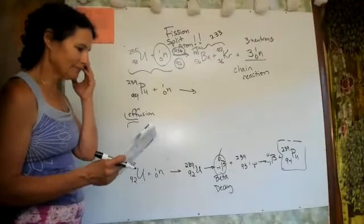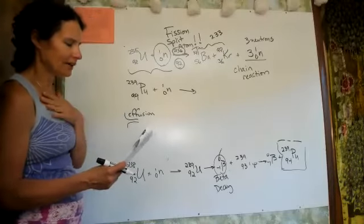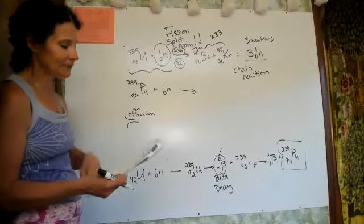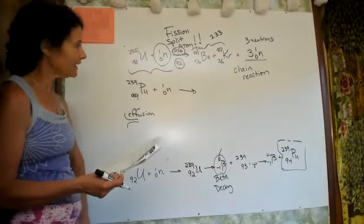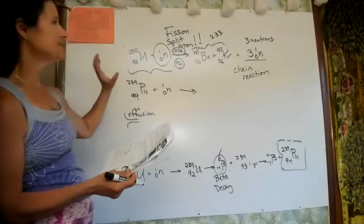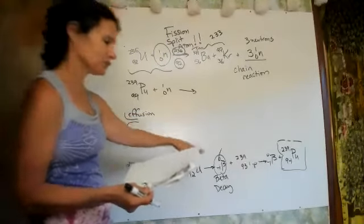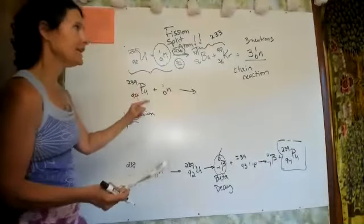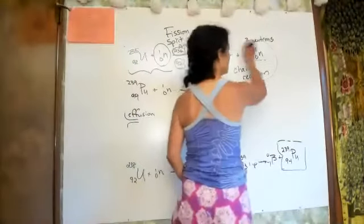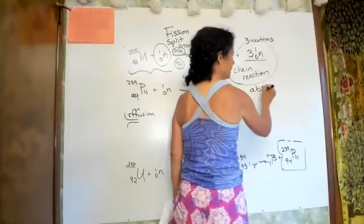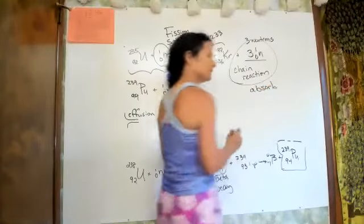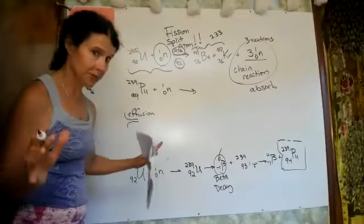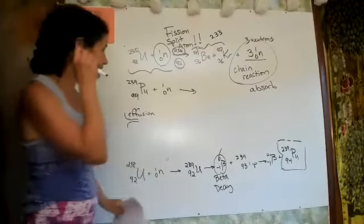The picture at the top is Otto Hahn and Lise Meitner. The second picture is Enrico Fermi, who did the first contained chain reaction. Our nuclear power plants use fission. If you can absorb these neutrons, the reaction won't go critical and you won't have an explosion.